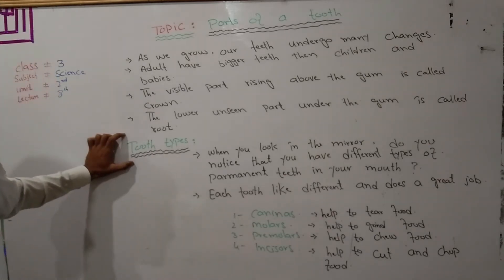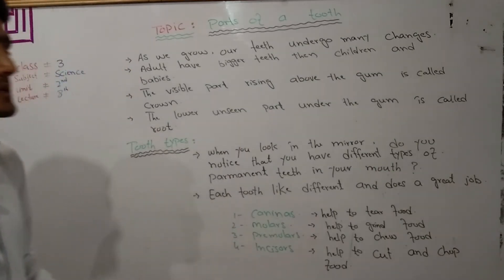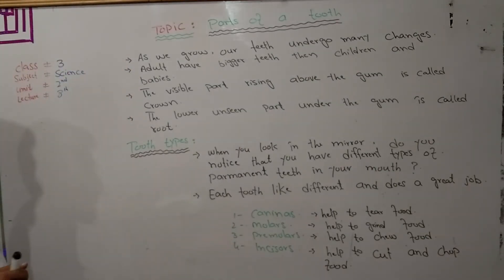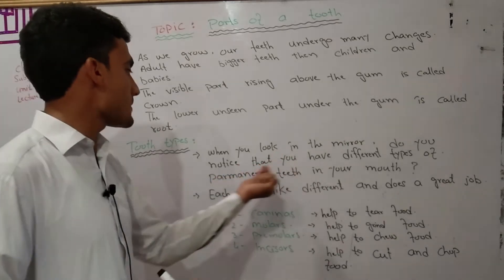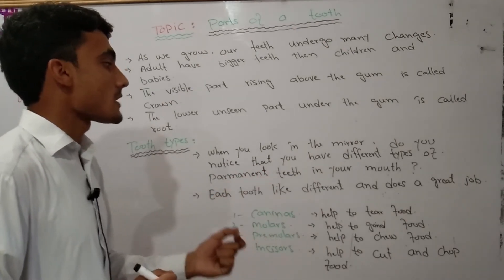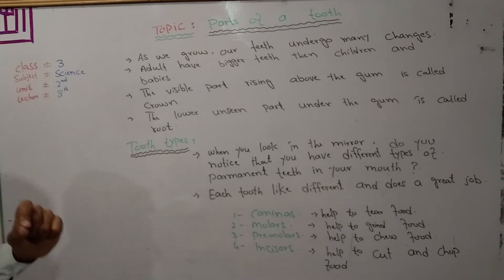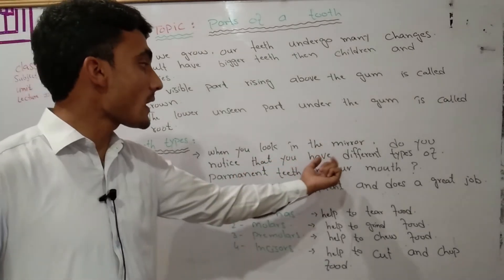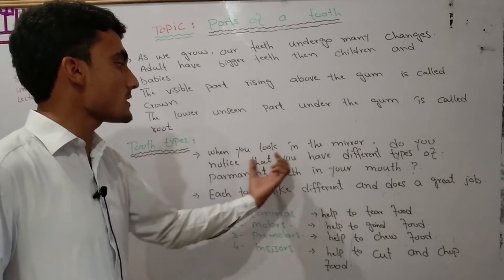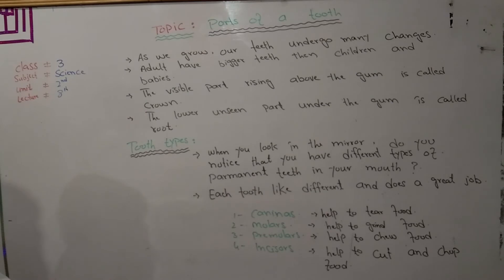We have two types of teeth. When you look in the mirror, you see the crown. You may notice that you have different types of teeth. Permanent teeth are permanent, and temporary teeth are not permanent.